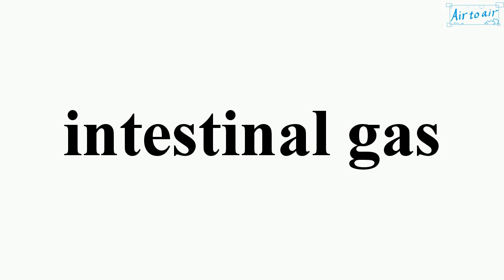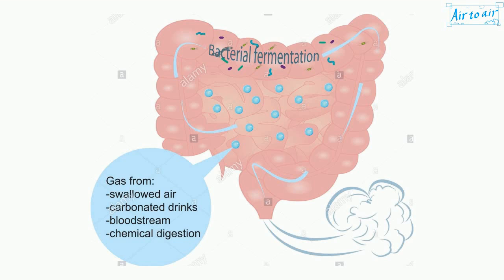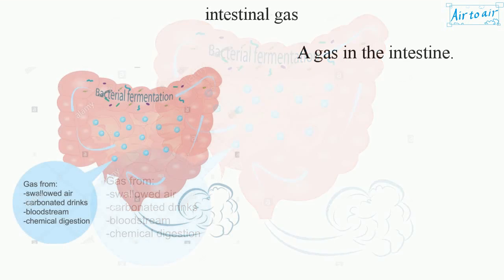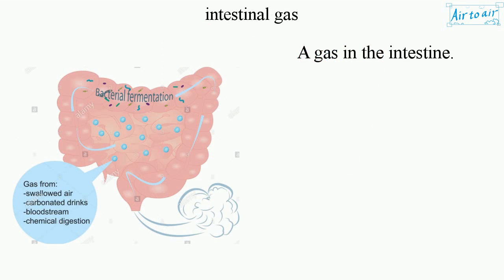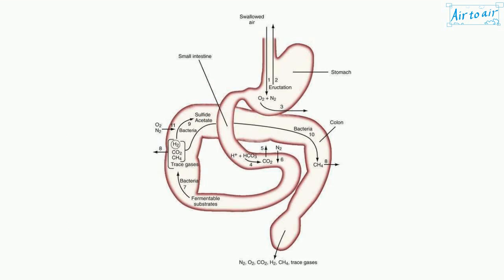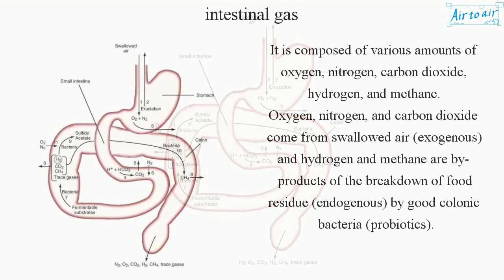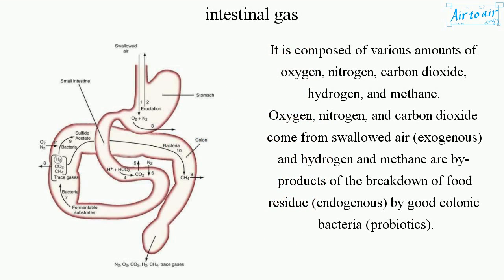Intestinal gas is a gas in the intestine. It is composed of various amounts of oxygen, nitrogen, carbon dioxide, hydrogen, and methane.